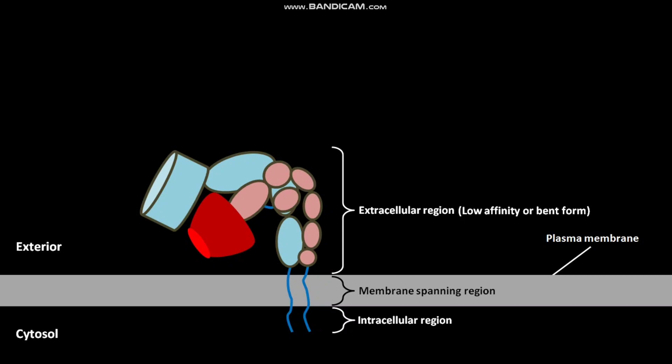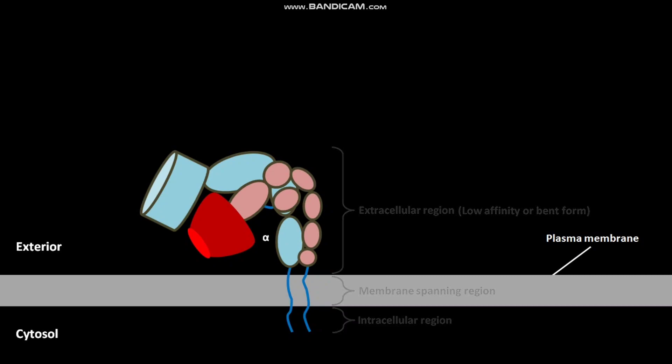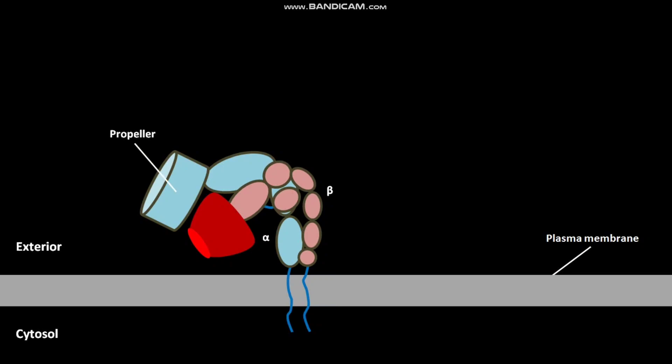The extracellular region of αβ3 integrin has an α subunit and a β subunit. The α subunit has a propeller domain and the β subunit has a βA domain. The major ligand binding sites are at the tip of the αβ3 integrin, where the propeller domain of the α subunit and the βA domain of the β subunit interact.